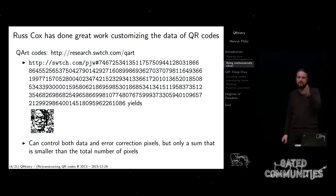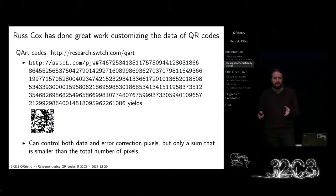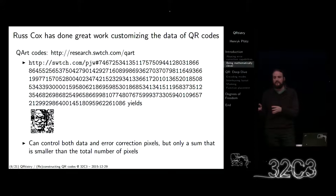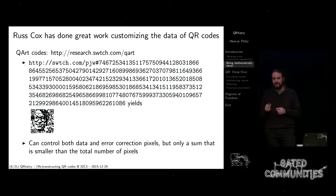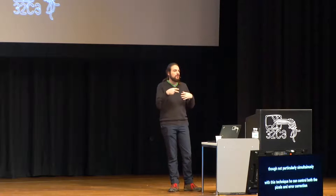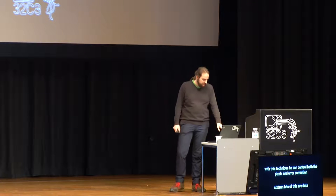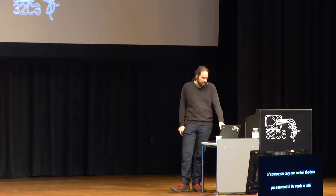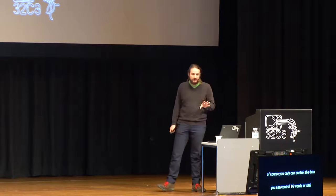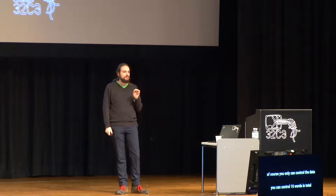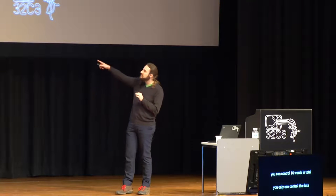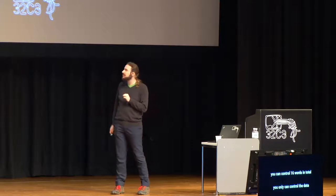With this technique he can control both the data and error correction pixels, though not particularly simultaneously. A QR code, for example, has 26 words in total — 16 of those are data, 10 words are error correction. Of course you can only control the data. At most you can control 16 words in total, like 10 data words and 6 error correction words. This was the introduction and motivation for why I want to be able to modify more than that, because as you can see there is still a lot of structure in there that you can't control.